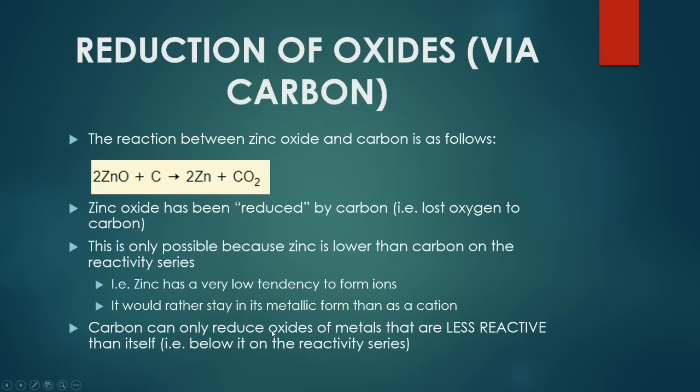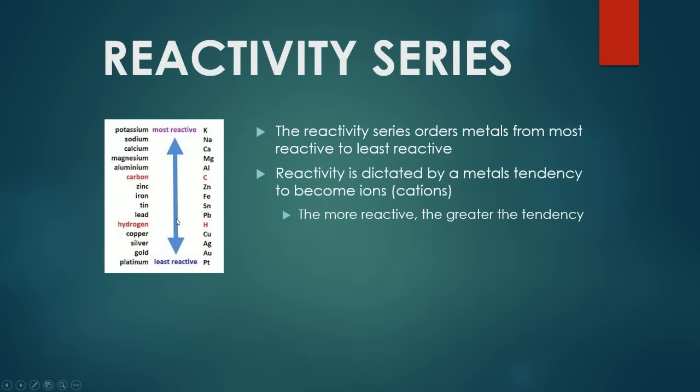If we were to narrow it down and put it into simple terms, carbon can only reduce the oxides of metals that are less reactive than itself or below it on the reactivity series. If we take a look at the reactivity series here, everything below carbon, all of these metal oxides can be reduced by carbon, whereas all the oxides above carbon cannot be reduced.